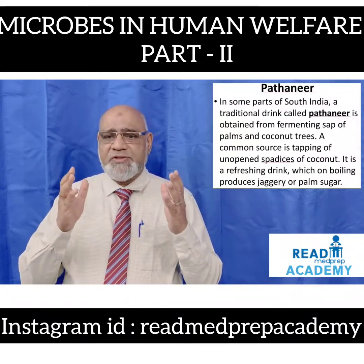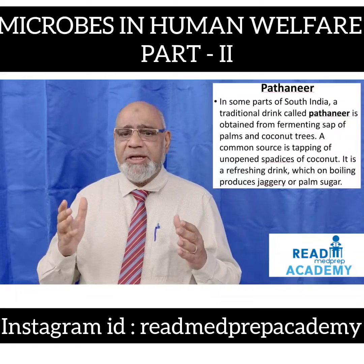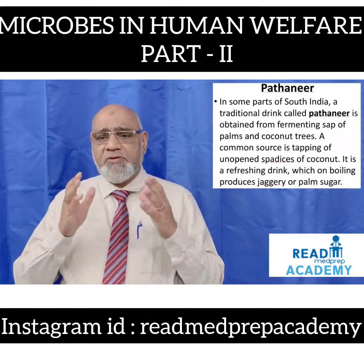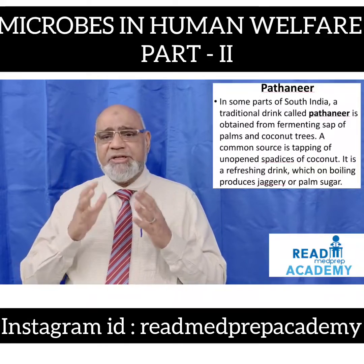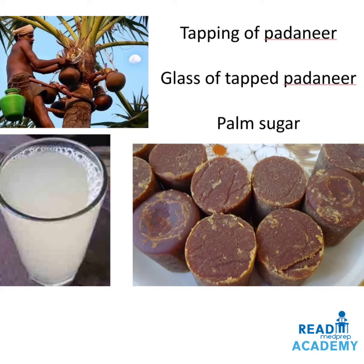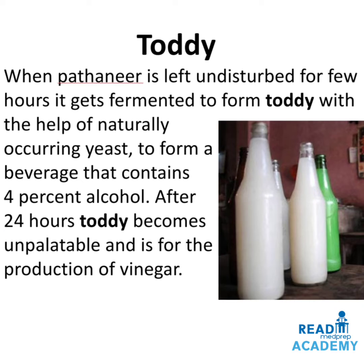In some parts of South India, a traditional drink called padanir is obtained from fermenting the sap of palms and coconut trees. A common source is tapping of unopened flower spathes of coconut or palm. It is a refreshing drink which, on boiling, produces jaggery or palm sugar. When padanir is left undisturbed for a few hours, it gets fermented with the help of naturally occurring yeast to form toddy, a beverage containing about 4% alcohol. After 24 hours, toddy becomes unpalatable and is used for the production of vinegar.